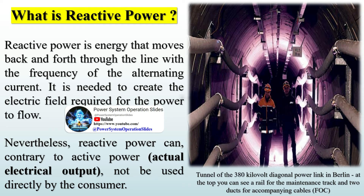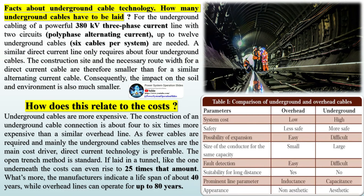Facts about underground cable technology: for the underground cabling of a powerful 380 kV three-phase current line with two circuits, up to 12 underground cables — six cables per system — are needed. A similar direct current line only requires about four underground cables. The construction site and necessary route width for a direct current cable are therefore smaller than for a similar alternating current cable, and the impact on the soil and environment is also much smaller.